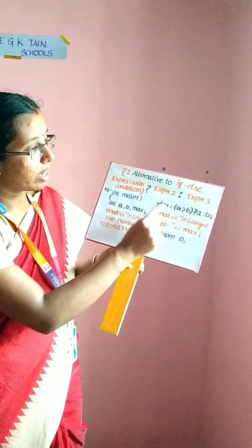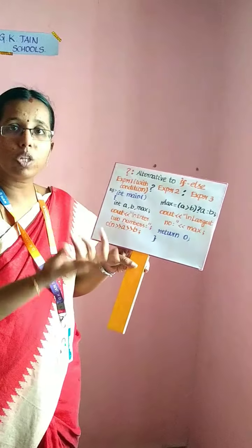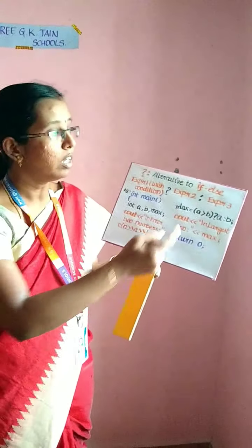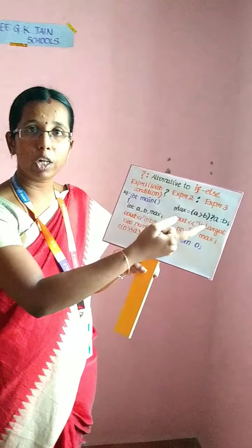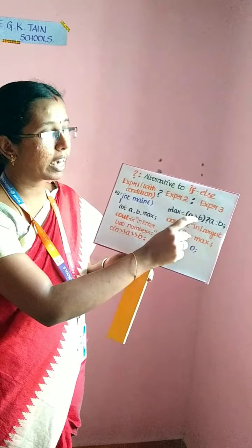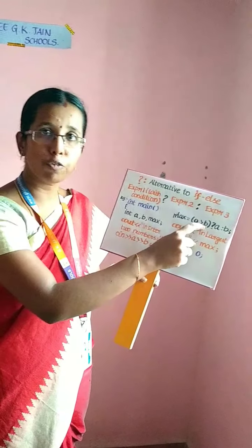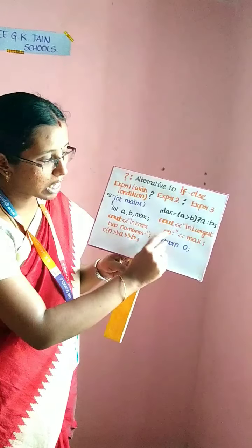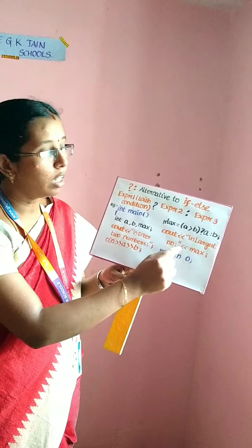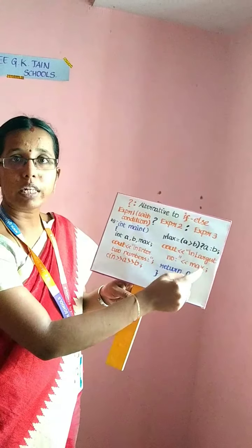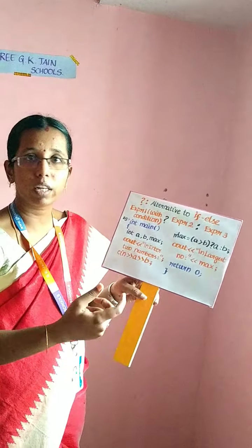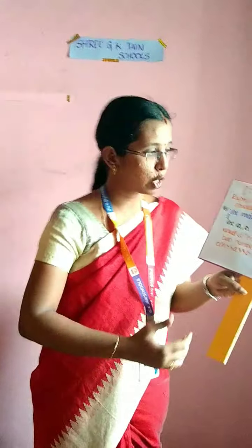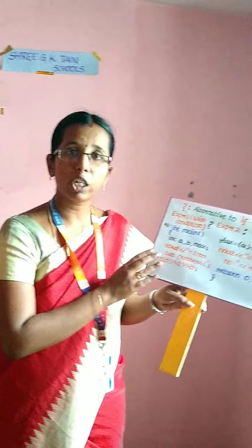Whatever values the user gives for a and b — say 10 and 20 — it checks: if 10 is greater than 20, that is false. So the output will be b. The output statement will print the largest number with a colon, and the output will be 20. The maximum number will be printed in your output console. So this is your conditional statement.